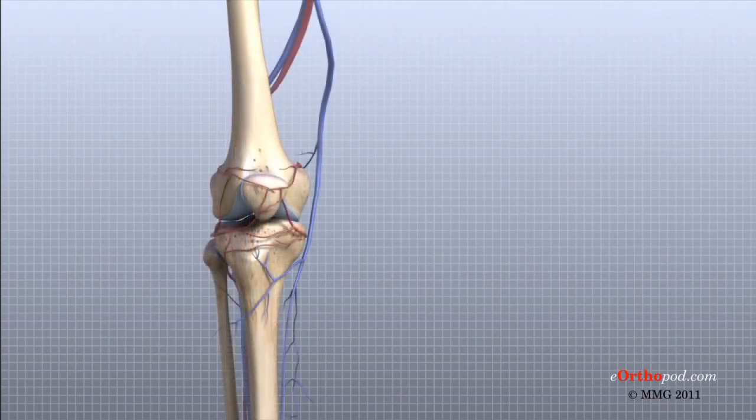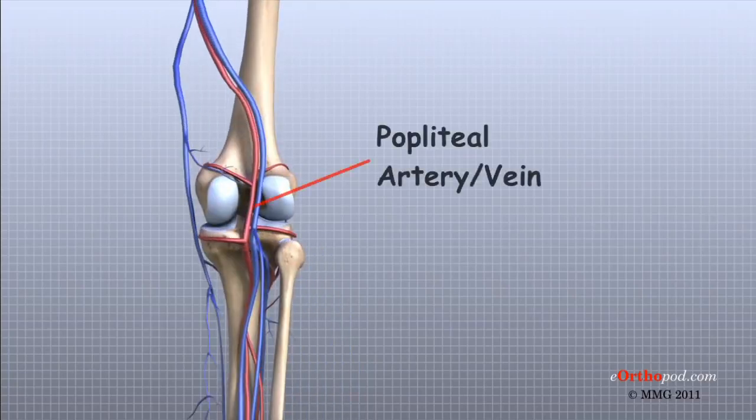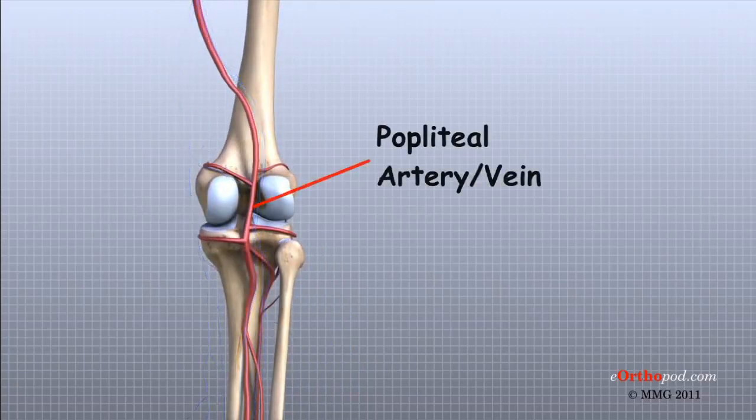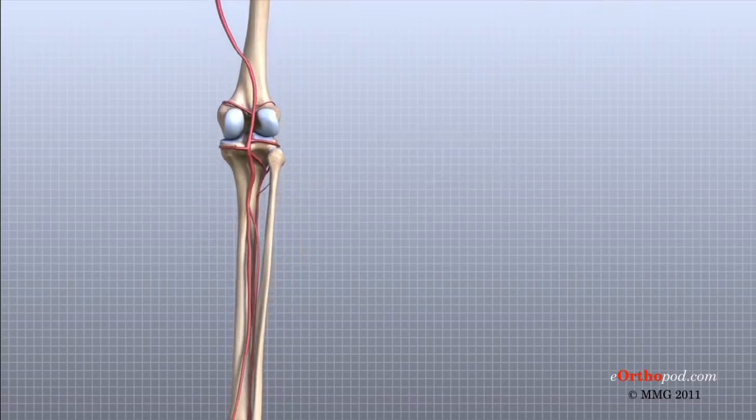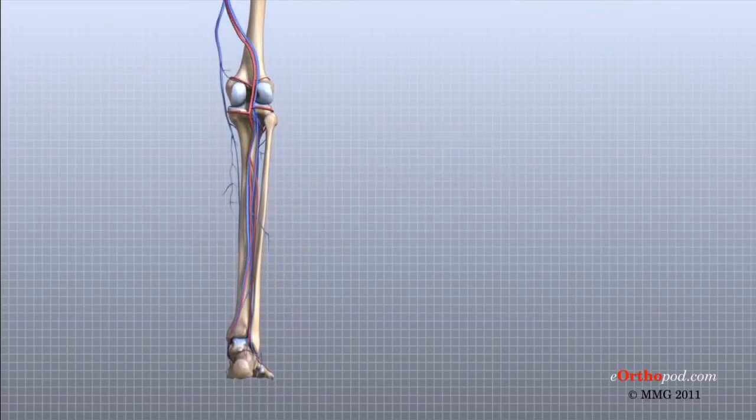The major blood vessels around the knee travel with the tibial nerve down the back of the leg. The popliteal artery and the popliteal vein are the largest blood supply to the leg and foot. If the popliteal artery is damaged beyond repair, it is very likely the leg will not be able to survive. The popliteal artery carries blood to the leg and foot. The popliteal vein carries blood back to the heart.